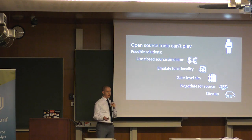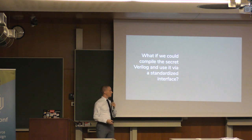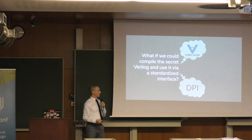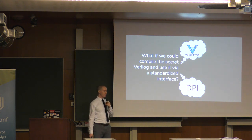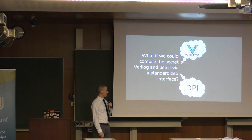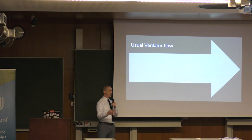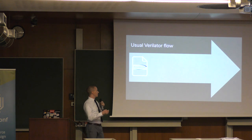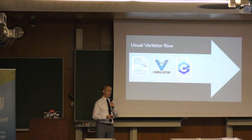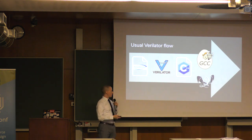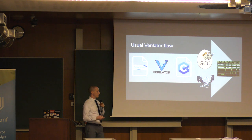None of these are great options, so this left me wondering: what if we could instead compile the Verilog and then use it via some kind of standard interface? Obviously this is Verilator's day job — this is what Verilator does all day long. The DPI, if you're not familiar, is a part of the SystemVerilog spec that allows for communication between Verilog and foreign languages. In the standard Verilator flow, you've got your Verilog, you run it through the tool, it emits a C++ class representing your design. You apply your own C++ for marshalling of data and time, run it through your C++ compiler, and out pops a binary which is a simulation.